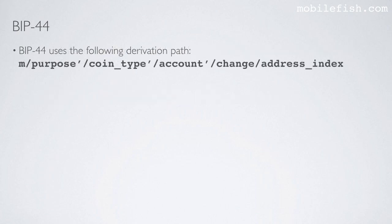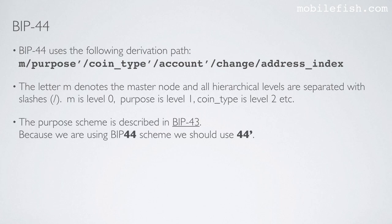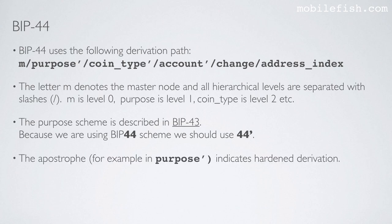Bitcoin Improvement Proposal 44 uses the following derivation path. The letter M denotes the master node and all hierarchical levels are separated with slashes. M is level 0, purpose is level 1, coin type is level 2, and so on. The purpose scheme is described in Bitcoin Improvement Proposal 43. Because we are using Bitcoin Improvement Proposal 44 scheme we should use 44 prime. The apostrophe, for example in purpose prime, indicates hardened derivation.